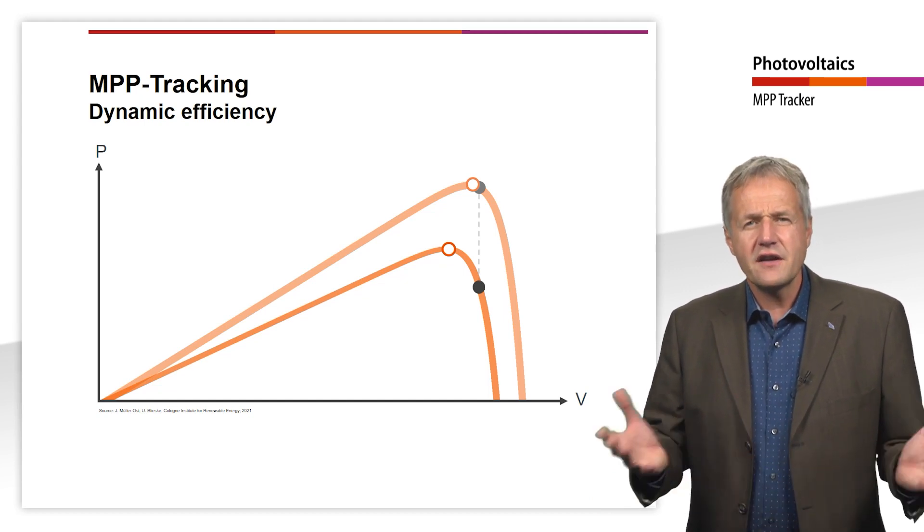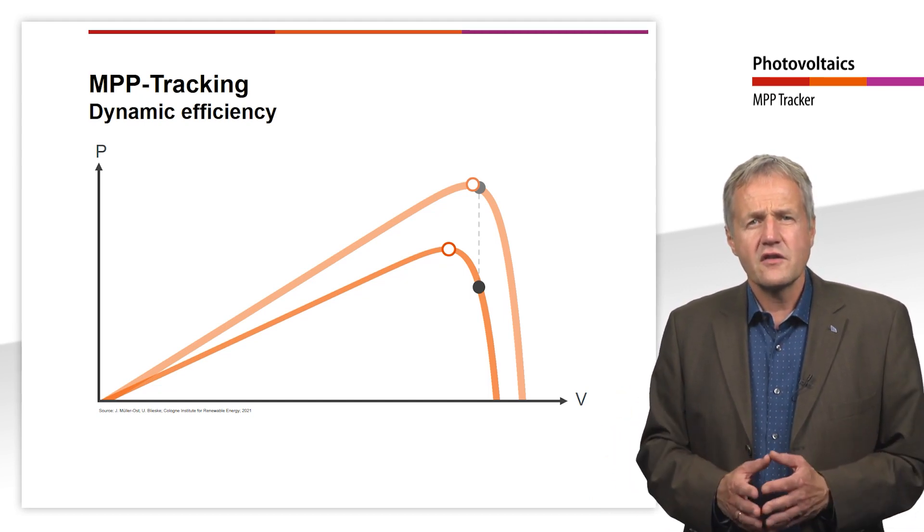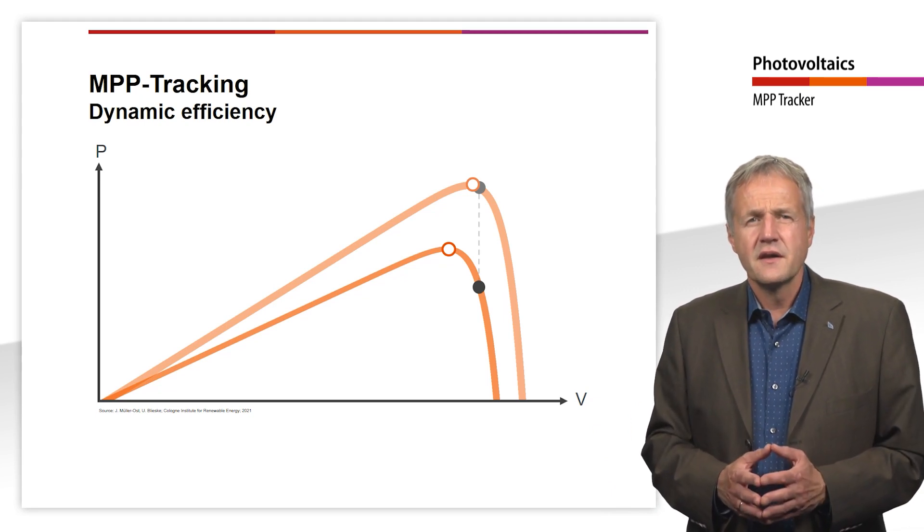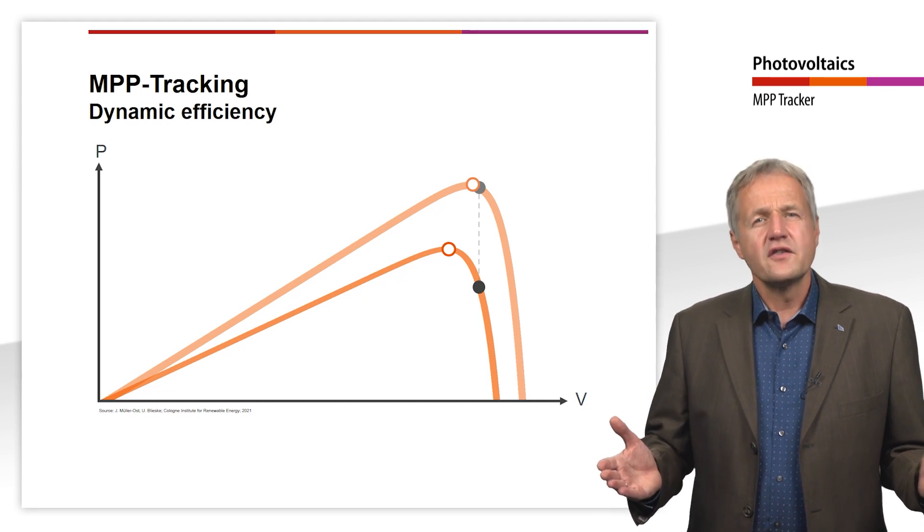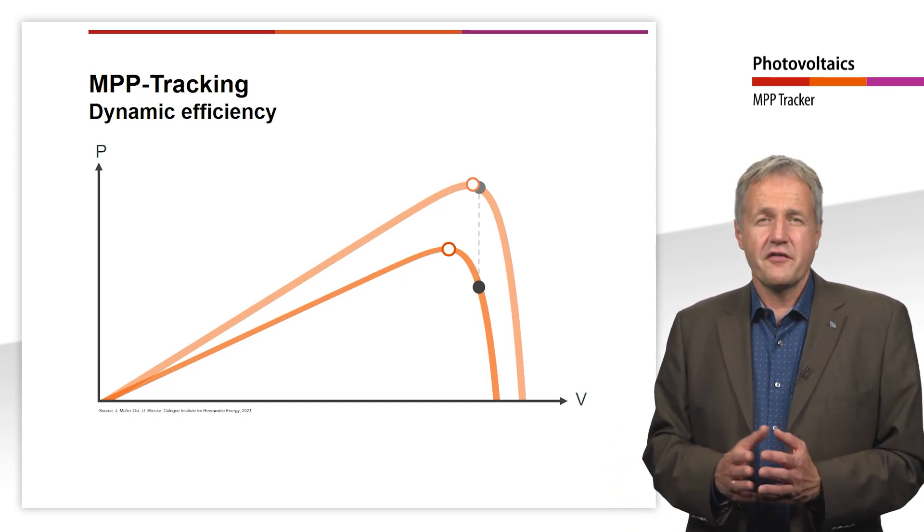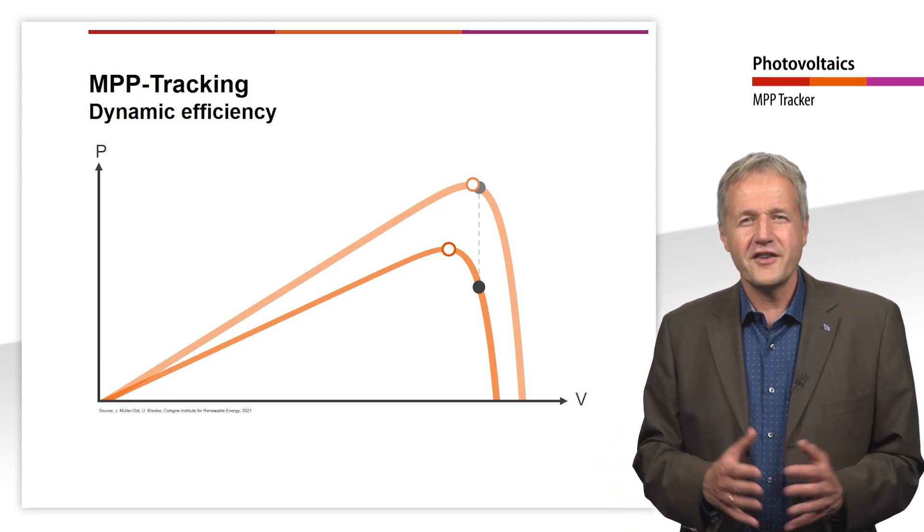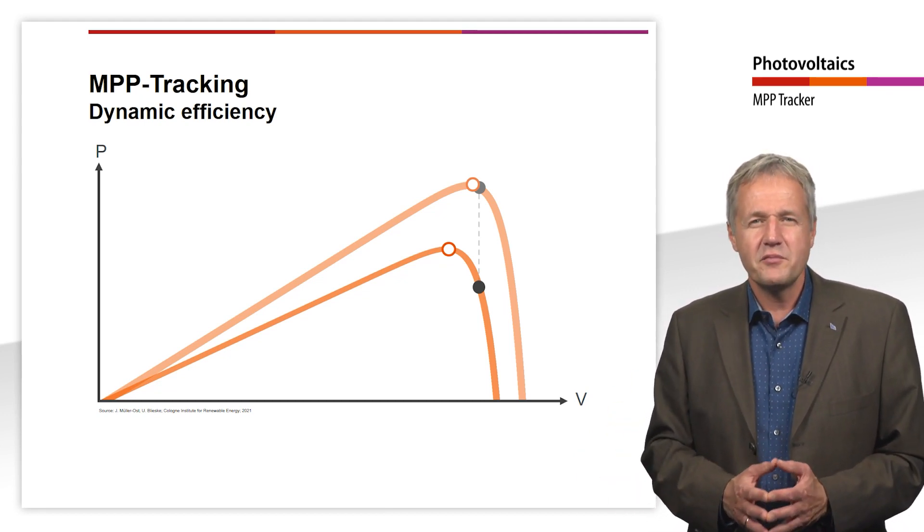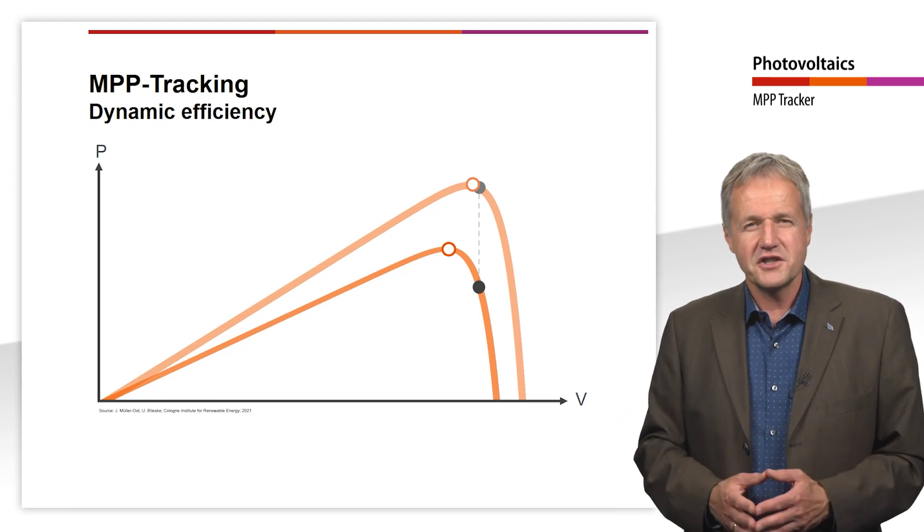There are various algorithms that manufacturers of MPP controllers use to counter this problem. This is where the wheat is separated from the chaff. The more sophisticated the algorithm of the MPP tracker, the faster it will find the MPP even under changing conditions.